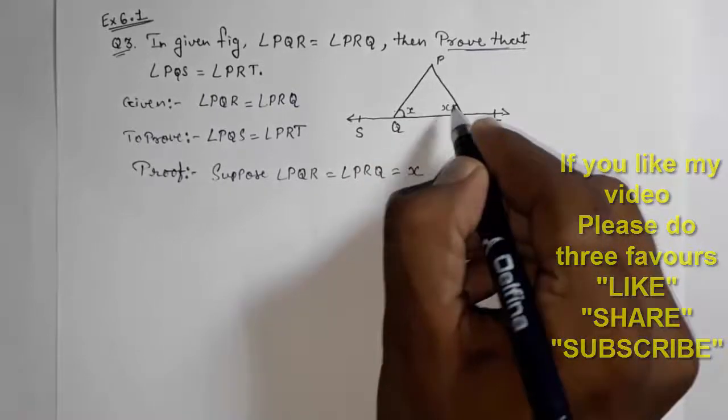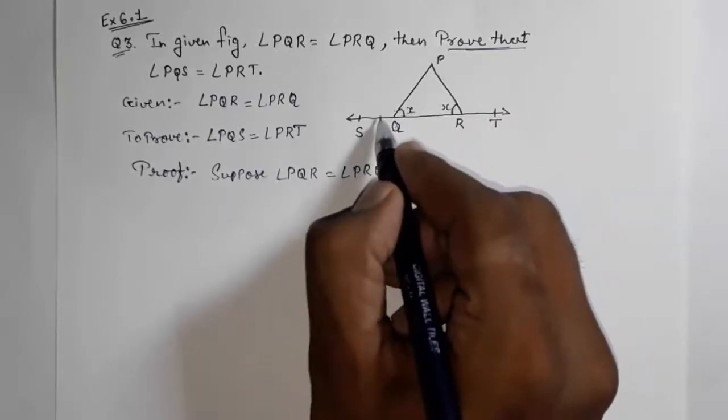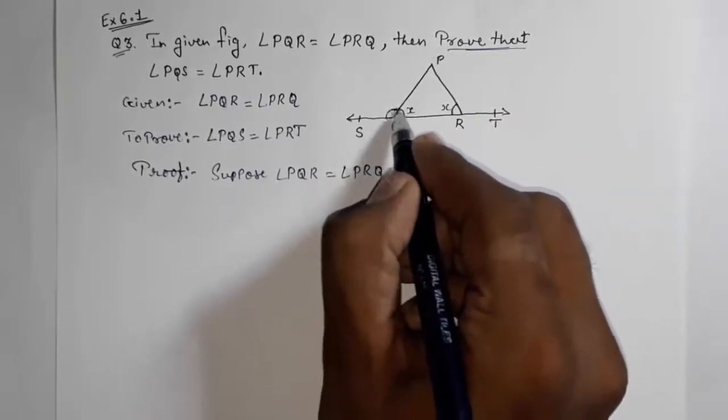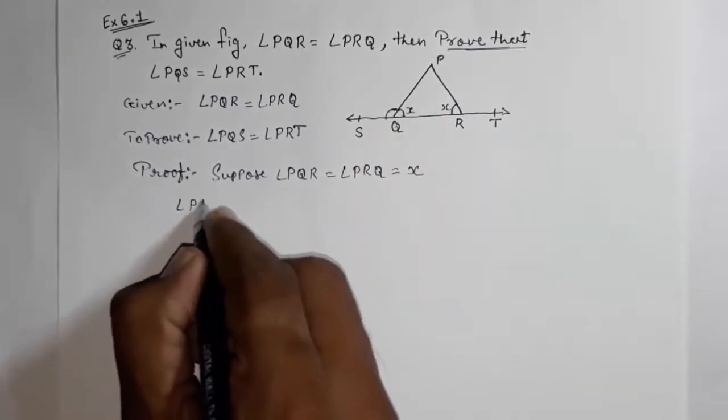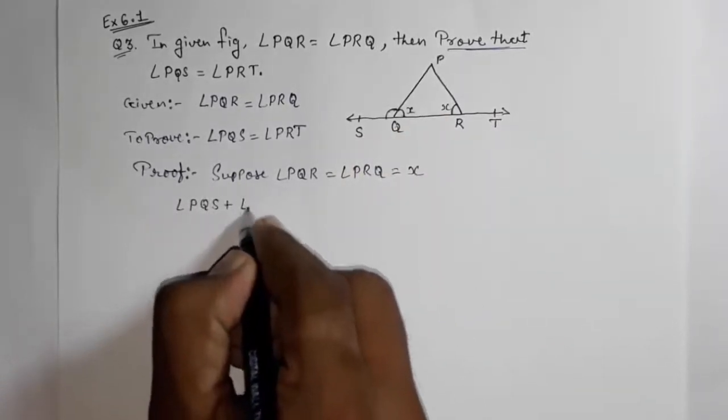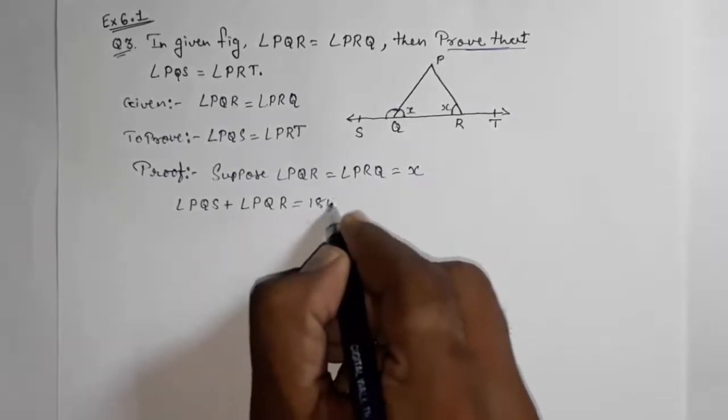Now we know the sum of these two angles. Look here, it is making a linear pair of angles. So can I write angle PQS plus angle PQR is equal to 180 degrees? Again, linear pair of angles.